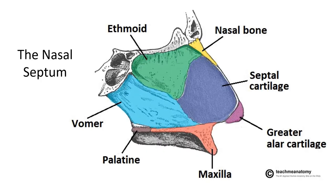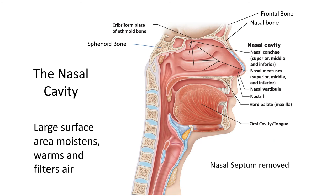Here we're seeing a sagittal section of the head, slightly off the midline so we can see the entire nasal septum. The vomer and the ethmoid contribute to the bony portion of the nasal septum. The anterior portion is made up by the septal cartilage, comprised of hyaline cartilage, which you can wiggle back and forth — though it's not as flexible as the elastic cartilages that support the nostrils. With the nasal septum removed, we can see just how large the nasal cavities are. They contain folds known as conchae, which increase the surface area over which air can be moistened and warmed.